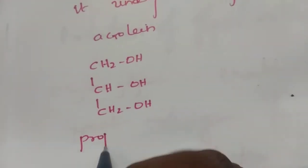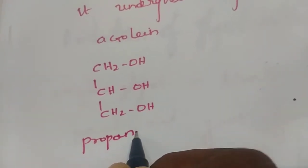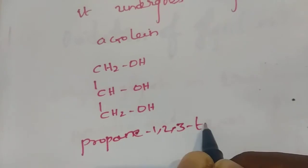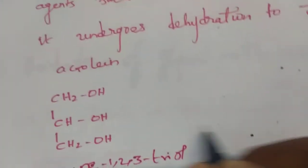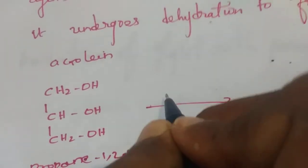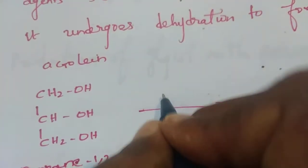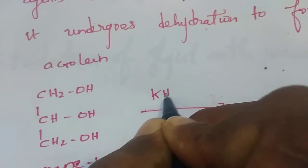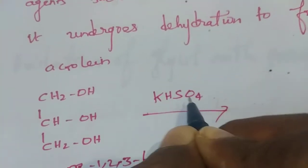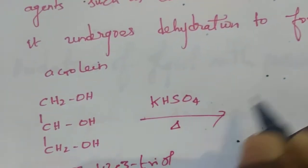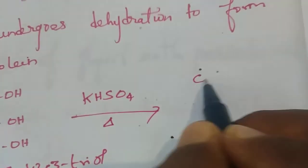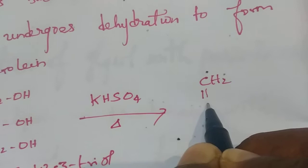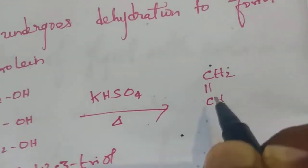propane-1,2,3-triol is heated with potassium bisulfate (KHSO4).